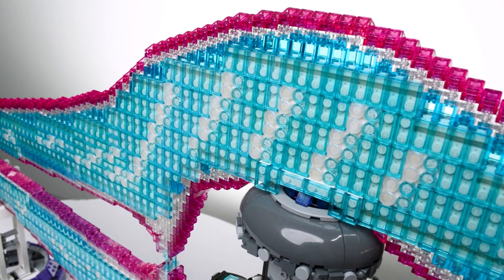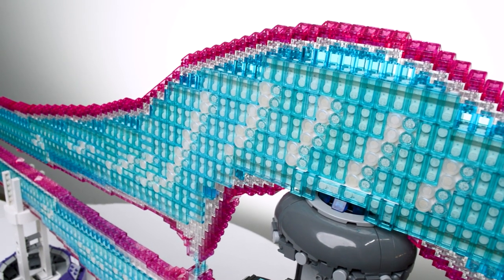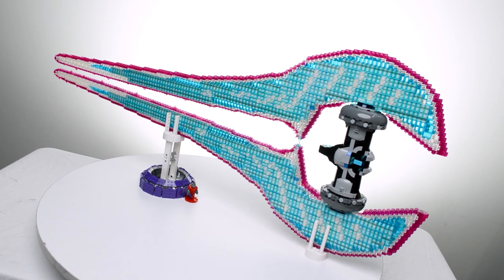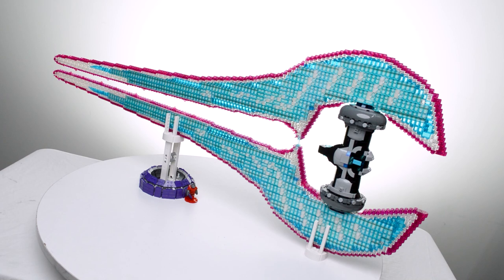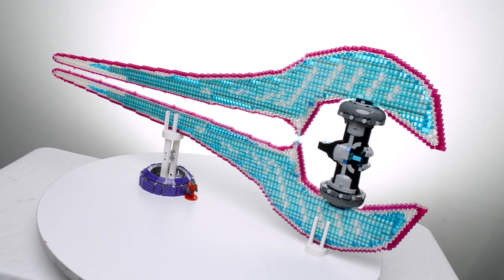Translucent blue plates are not cheap on Bricklink. Along the sides of the blade are tiles over white plates. Since it would also be pretty difficult to light this up with LEDs, backing translucent tiles with white was the next best solution.